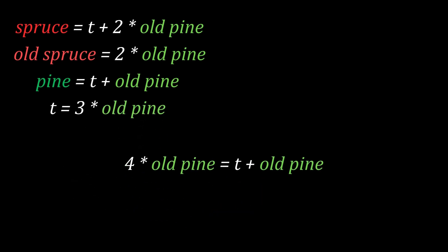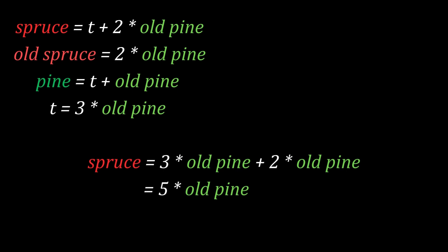We can now plug this back into the new spruce, which equals t + 2 times the old pine. And now that we know t = 3 times the old pine, we can plug that in. So we have 3 times the old pine + 2 times the old pine = 5 times the old pine.